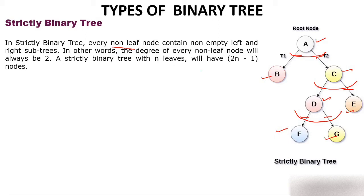A strictly binary tree with n leaves will have 2n minus 1 nodes. For example, with four leaves: 2 × 4 − 1 = 7 nodes. You can clearly count seven nodes in the tree. So a very important formula: if a strictly binary tree has n leaves, the total number of nodes is 2n − 1.